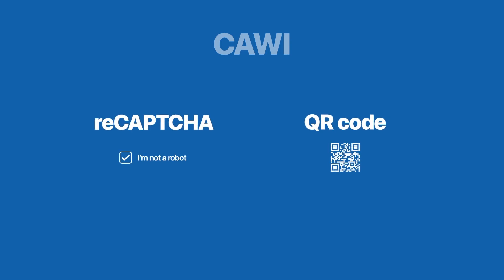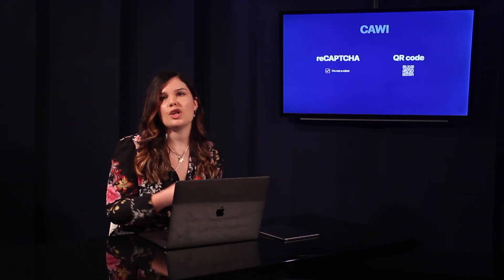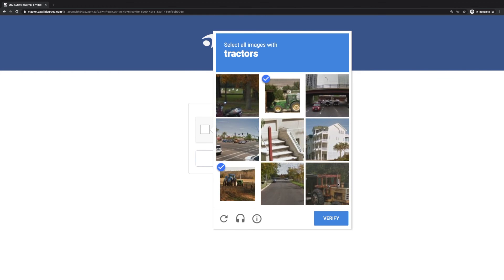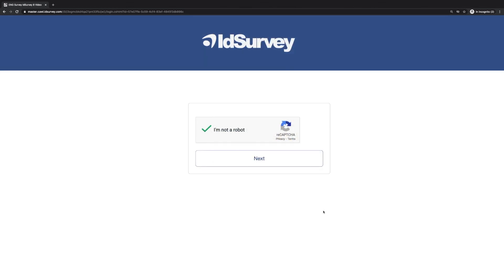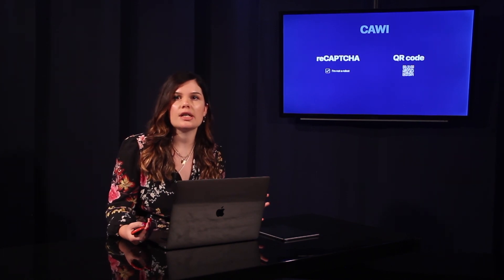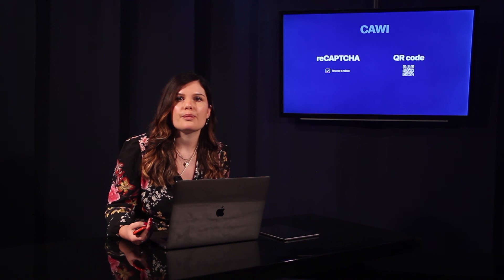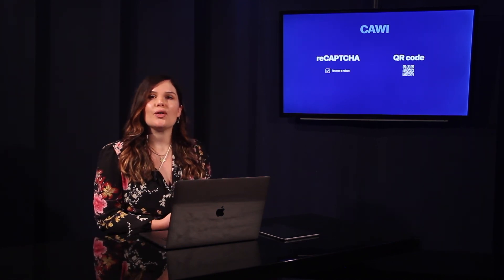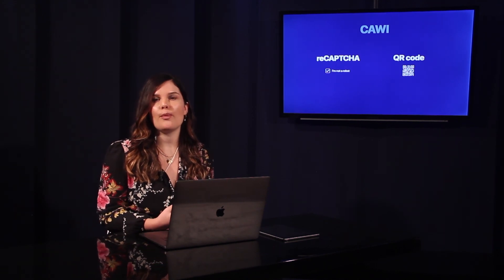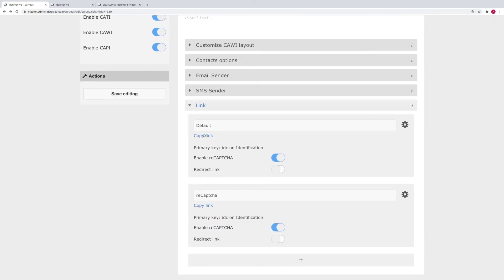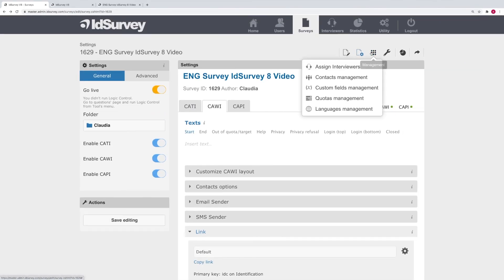ID Survey 8 also adds new features to the CAWI methodology, in addition to the new question types already discussed. ReCAPTCHA functionality has been added to prevent bot access to interviews — extremely useful when posting a link to a website or social network. A specific redirect has been added for complete but over-quota interviews, as requested by some panel providers. To facilitate testing and previewing on mobile devices, a QR code is available for immediate access to the interview. The QR code is available on the 'Copy link' button and in the Actions menu of each contact if you want to access the interview of a specific respondent.